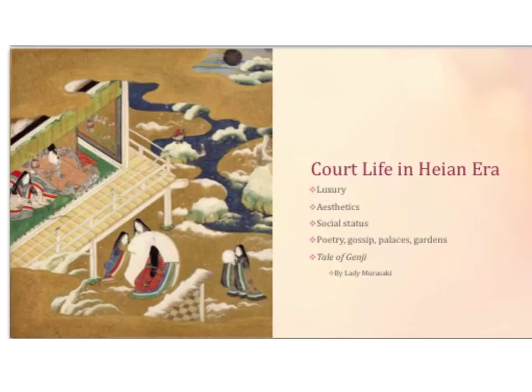So how did the Japanese live? Here's an image of court life in the Heian era. Their life was based on luxury, aesthetics — all things that are beautiful — social status, poetry, gossip, palaces, and gardens. One of the most famous works of literature from this time period is The Tale of Genji, written by Lady Murasaki. She wrote about court life in Japan, representing a very high level of living.